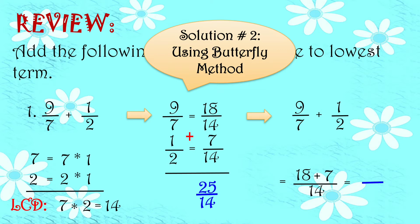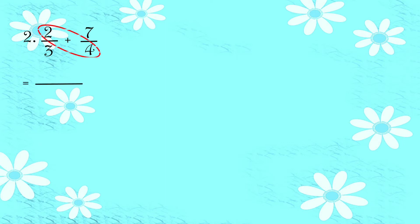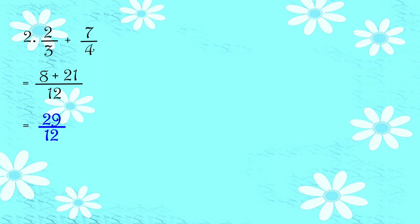So magkaparehas lang yung ating mga sagot. Nasa inyo na yan kung saan kayo mas nadadalian. Number 2: 2 third plus 7 over 4. So using butterfly method — yun yung ginamit ko kasi para sa akin yun yung mas madaling gamitin. So 2 times 4, we have 8. 3 times 7, we have 21. Then 3 times 4 is equals to 12. And then mag-add na tayo. So 8 plus 21 is equals to 29, copy the denominator which is 12. So we have 29 over 12.